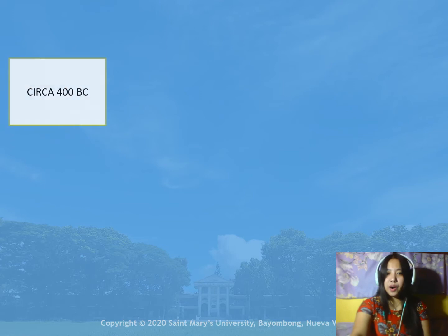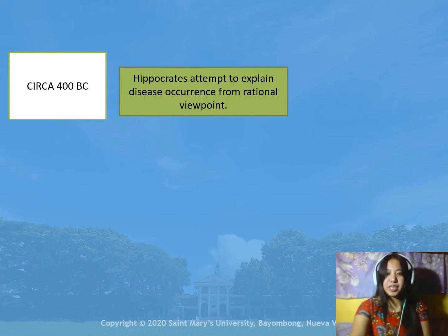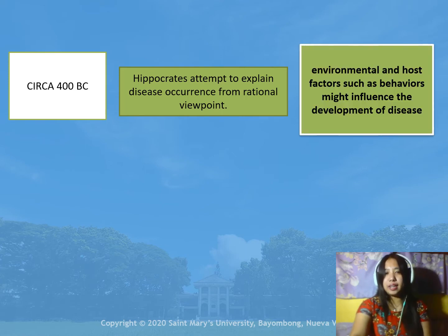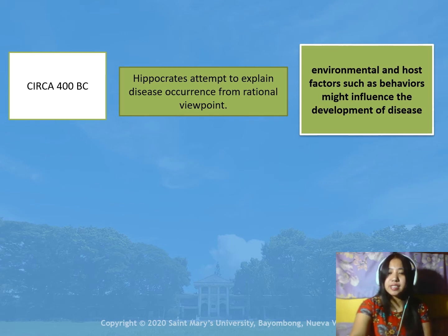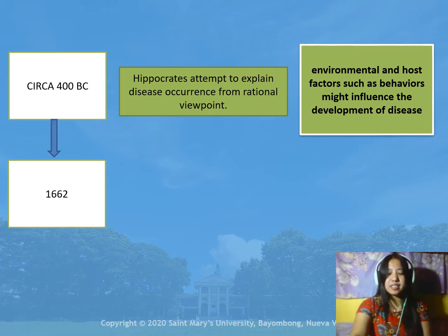Let us start around 400 BC. The first person here is Hippocrates. He attempted to explain disease occurrence from a rational viewpoint rather than a supernatural viewpoint. He wrote an article entitled 'On Airs, Waters, and Places,' in which he suggested that environmental and host factors such as behaviors might influence the development of disease. And then in 1662,